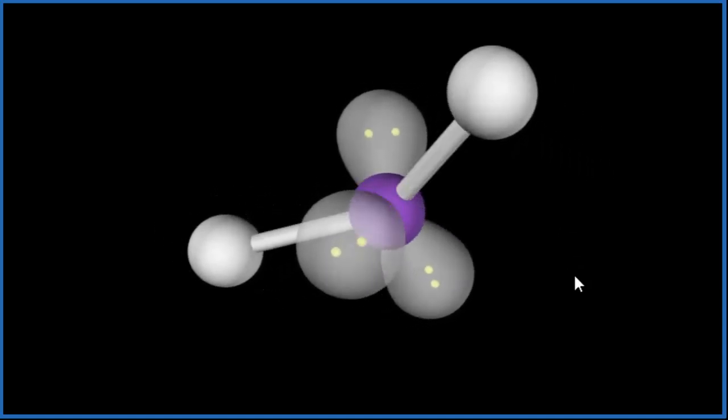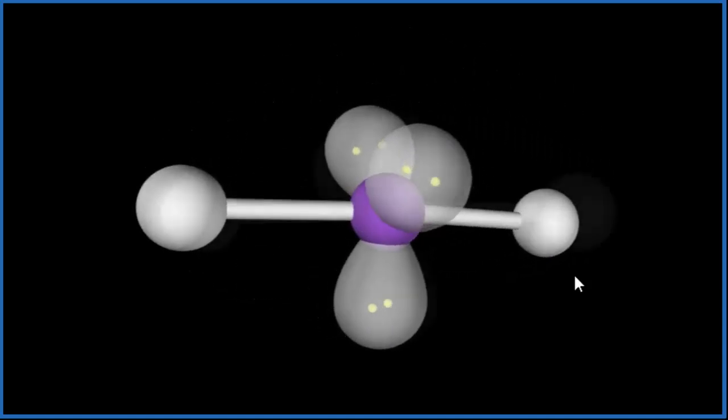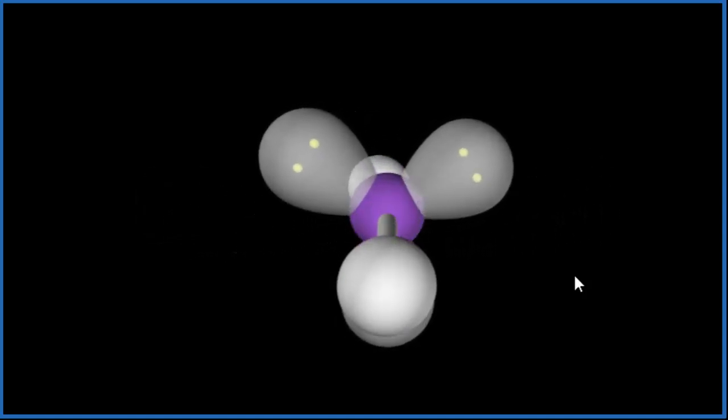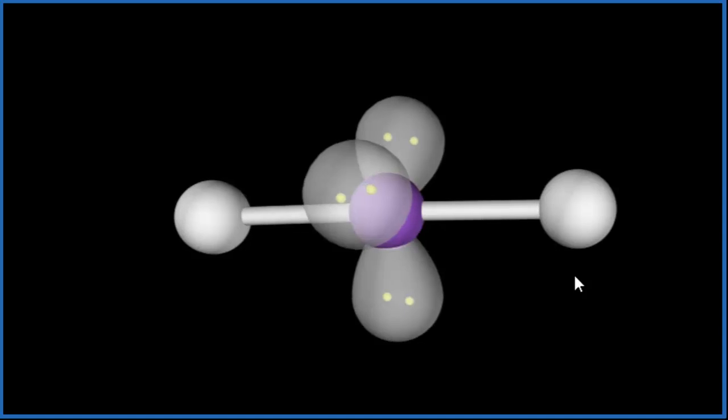And we end up with a linear molecular geometry. We can see right there down the middle of that we have this straight line, 180 degrees for this straight line through the iodine atoms. So this is a linear molecular geometry.